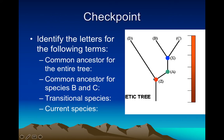I want to give you a quick checkpoint to see if you can do this yourself. Which letter is the common ancestor for the entire tree? The common ancestor for the entire tree should include everything here, and if we trace back we see Z is the common ancestor for everything — or something before Z, but that's not pictured, so Z is the best answer.